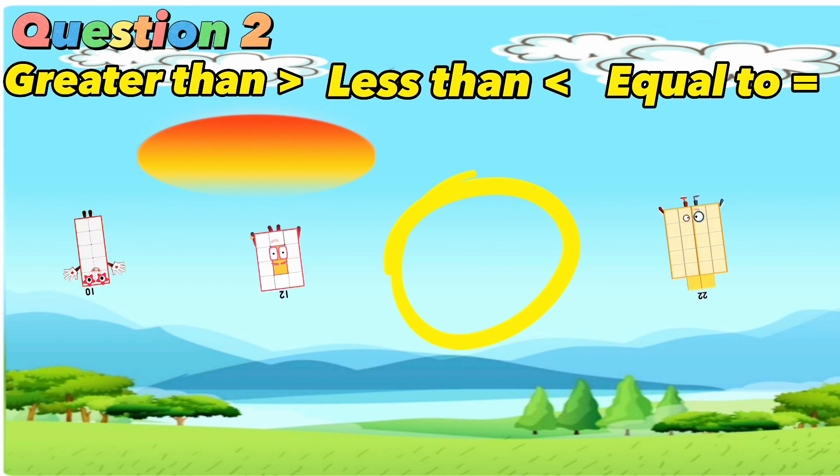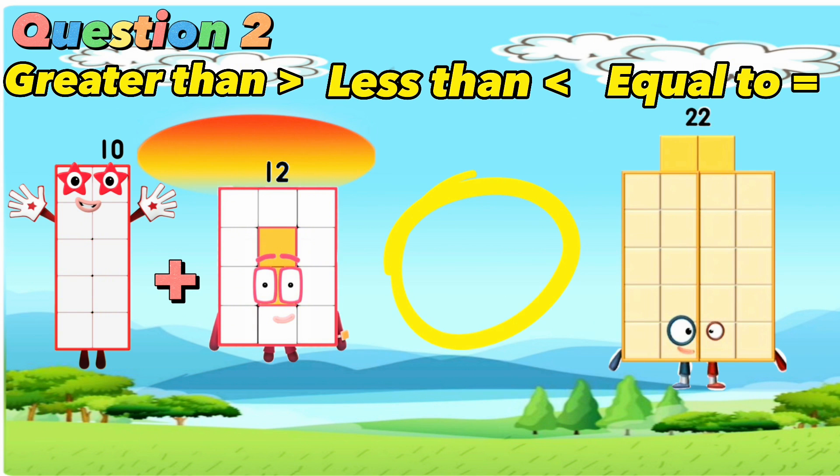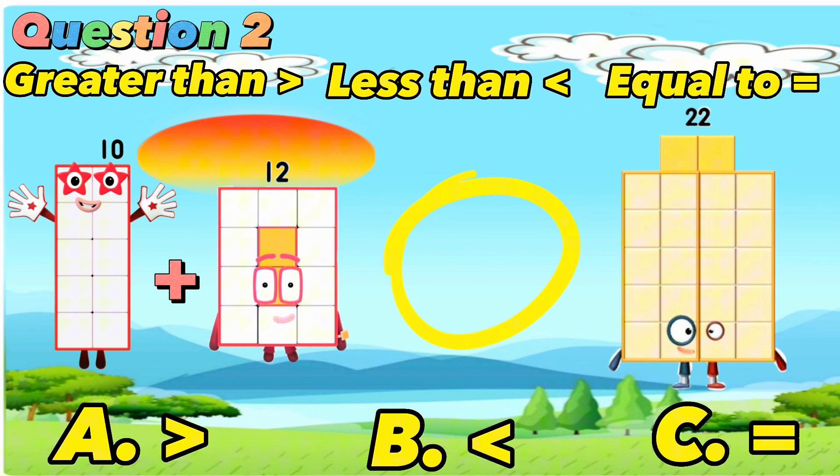Question number 2. Is it letter A, greater than, B, less than, or C, equals to? Can you guess which one is the correct answer? If your answer is letter C, you're correct. 10 plus 12 is equals to 22.